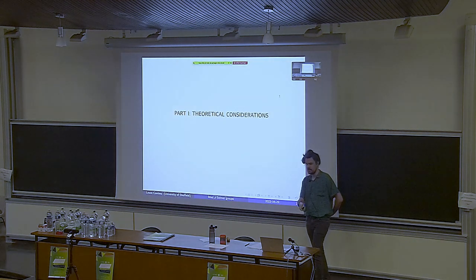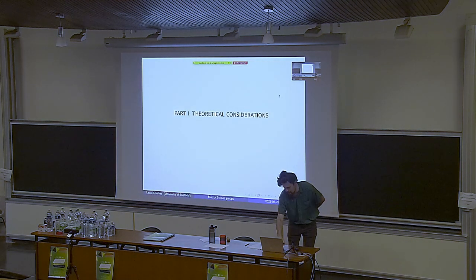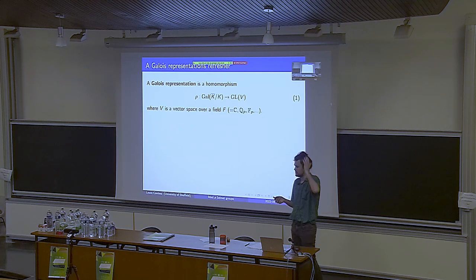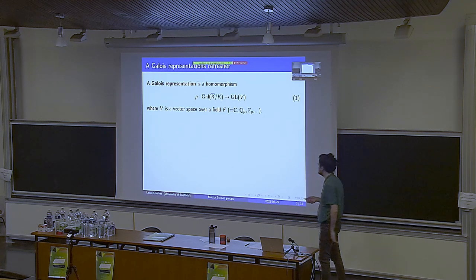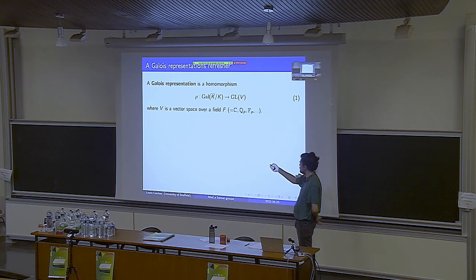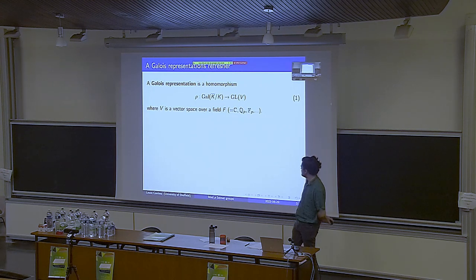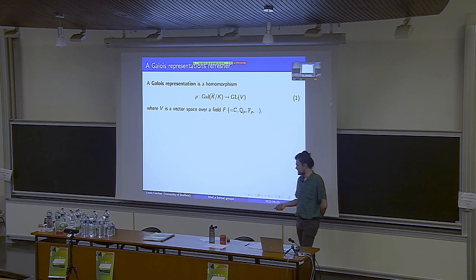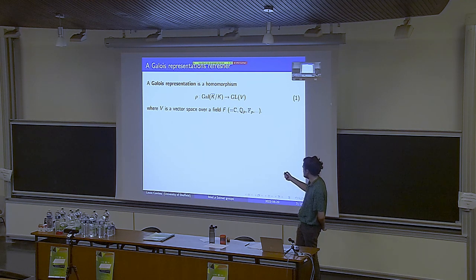So I have part one: theoretical considerations. I will just remind you what a Galois representation is if you don't know or maybe don't remember. A Galois representation is just a homomorphism from some absolute Galois group — the Galois group of an algebraic closure of a number field — to some automorphism group of a vector space. The vector space we take over a field: complex numbers, p-adic numbers, finite field, or maybe some finite extension of one of these.